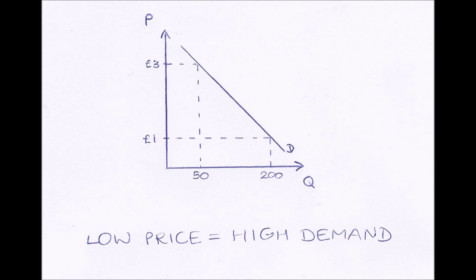And demand can be shown on a demand curve as we have drawn here. On our y-axis we have price, P. And on our x-axis we have quantity demanded, Q. And quantity demanded just means how much demand there is. And our demand curve slopes downwards from left to right. And this is due to a very important rule I have written down at the bottom here.